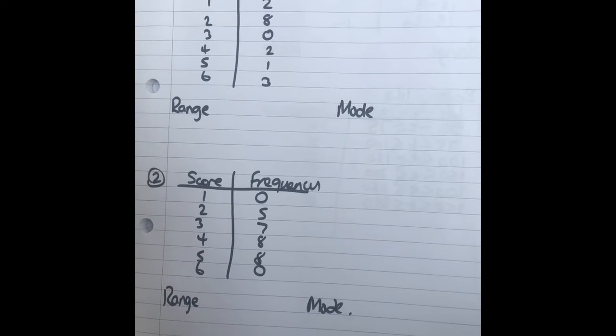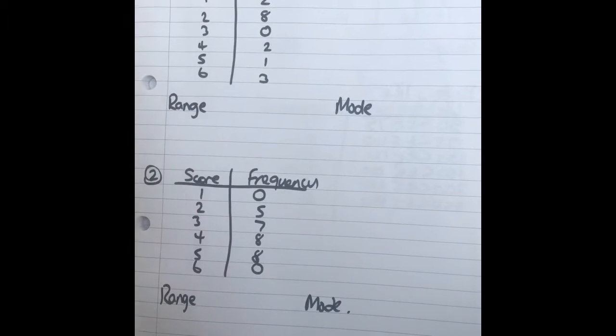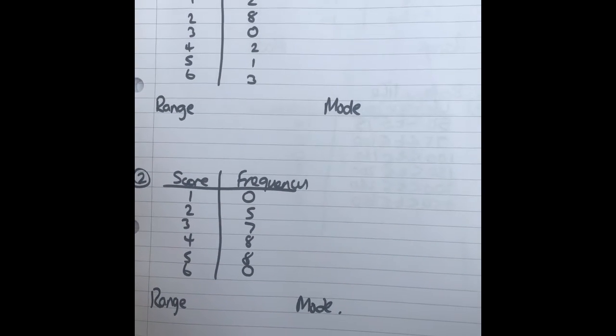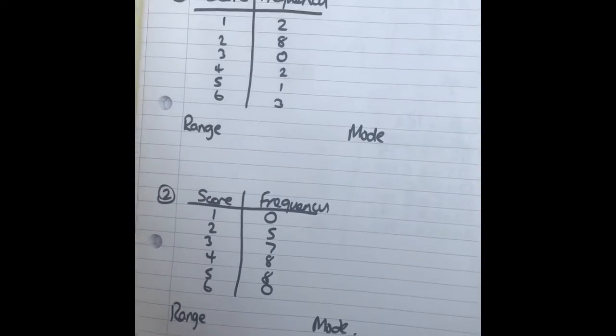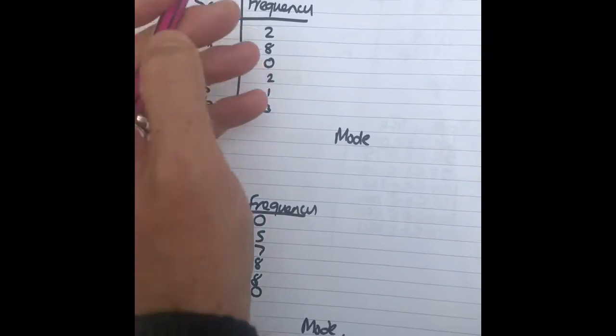Hi guys, so clips 414 and 415 we're going to do in the same one. The tables are very similar in terms of the data and it makes more sense if we do both clips in one go. So 414 was range, 415 is mode.